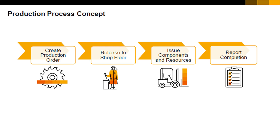Components used in the production process can be released to the shop floor depending on the issuing method. When all work is done, you should report completion of the production order. At this point, the finished items are received in the warehouse. Note that when the automatic method for issuing components to the shop floor is selected, the components and resources are reported as issued as soon as you choose report completion.